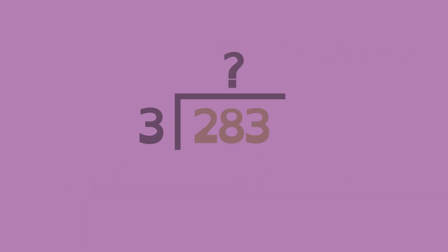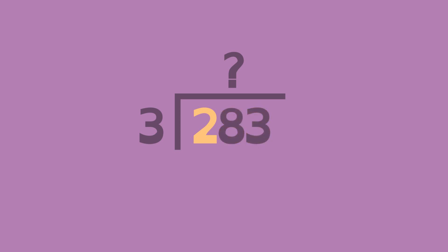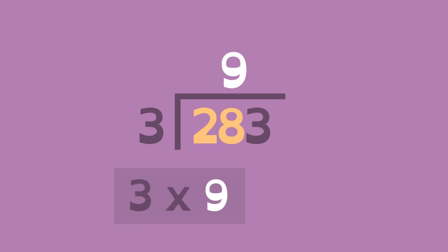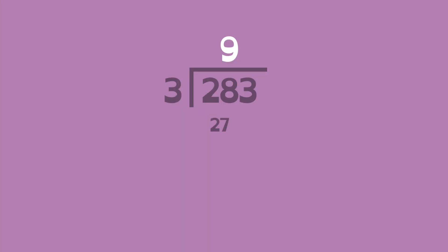When numbers are large, we think of them in parts. First, look at the number in the hundreds place. 2 divided by 3 doesn't result in a whole number. What if we include the number in the tens place? 3 times 9 is 27, so 28 can be split into 3 groups of 9 with 1 left over. Write 27 here and subtract to show the remainder of 1.